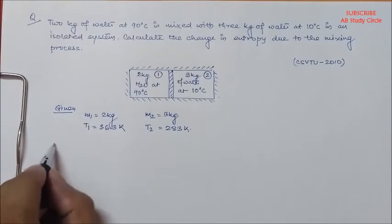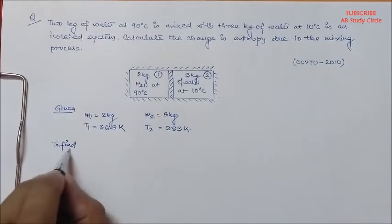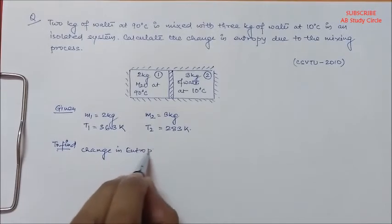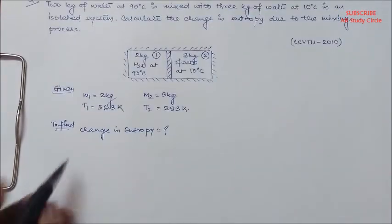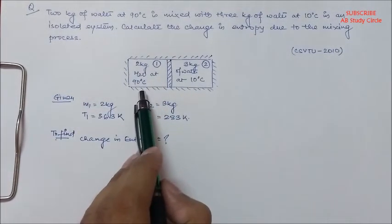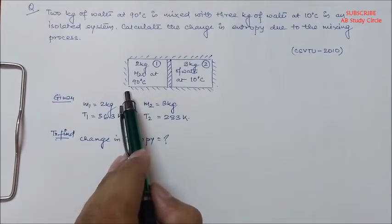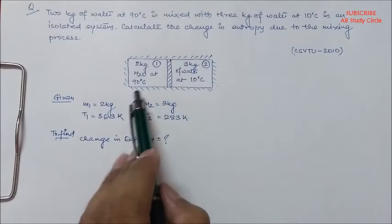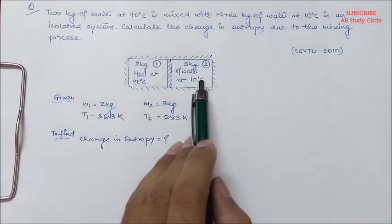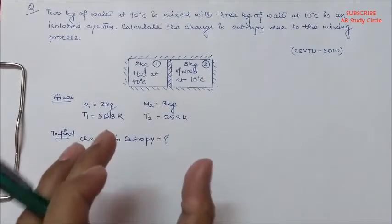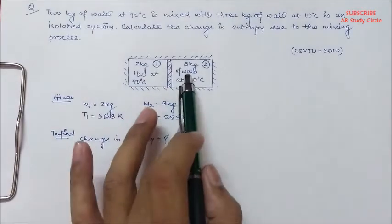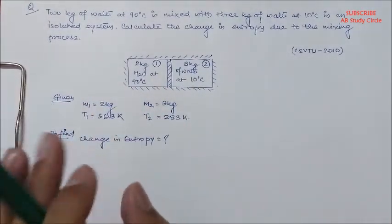And we want to find out the change in entropy. Now, see, when these two bodies are mixed, the body with higher temperature will lose some heat and that heat lost by this body will be gained by the body which has the lower temperature, to attain a thermal equilibrium after mixing so that they both have same temperature.